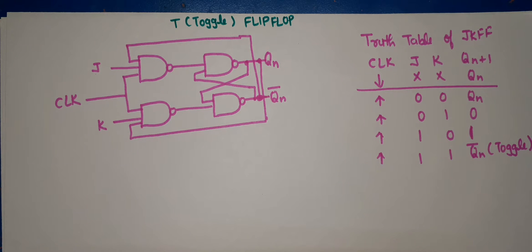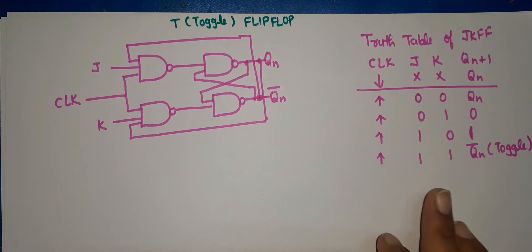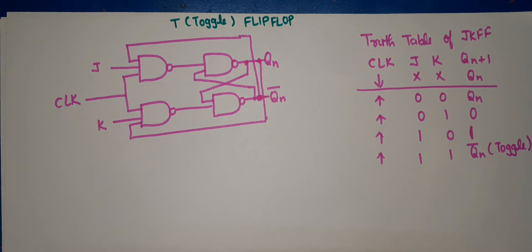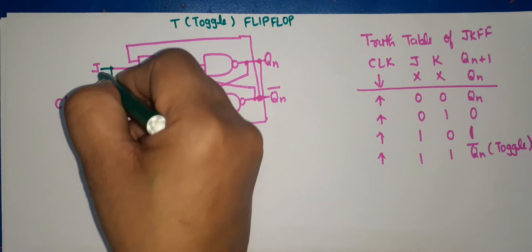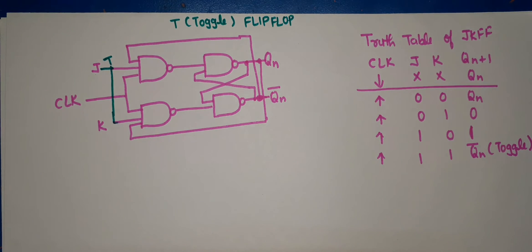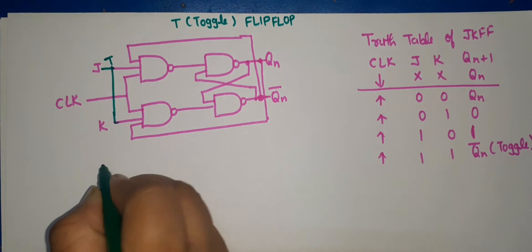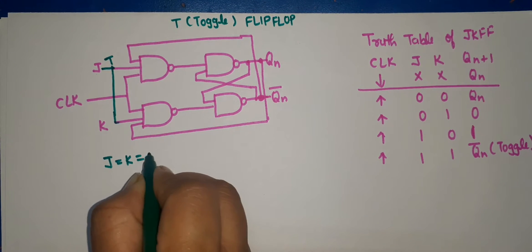In this lecture I will discuss the T flip-flop, where T stands for Toggle flip-flop, and we will implement this through JK flip-flop. We are using the truth table of JK flip-flop to do this conversion. We will short J and K, leaving only one input which we call T. According to this diagram, J is equal to K is equal to T.